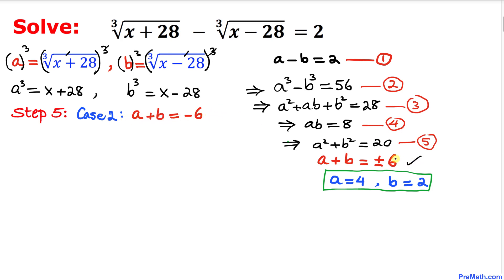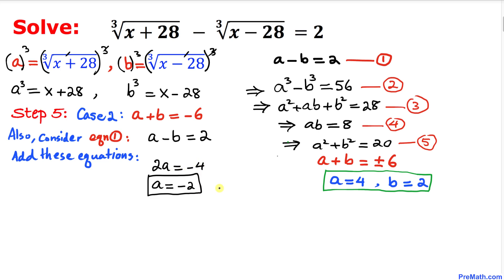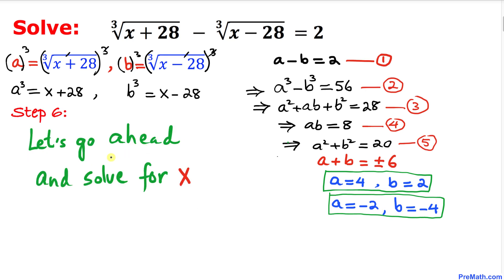Case two: a + b = -6. Again using equation one, a - b = 2, adding gives 2a = -4, so a = -2. Plugging back in gives b = -4. So for case two, a = -2 and b = -4.